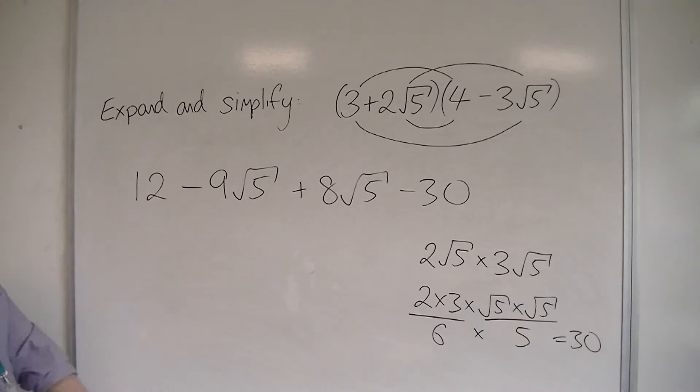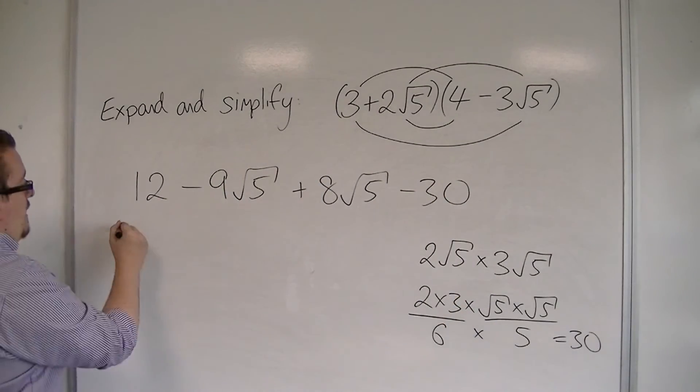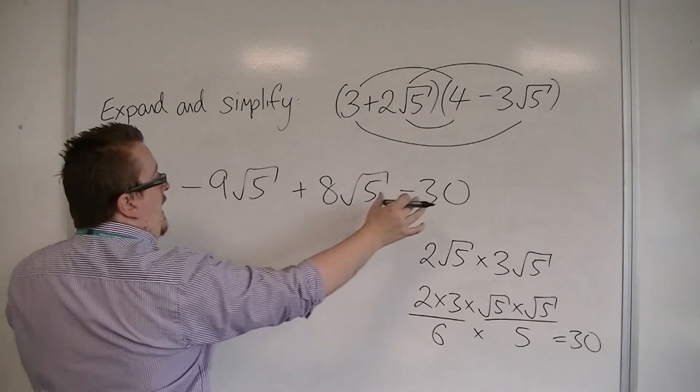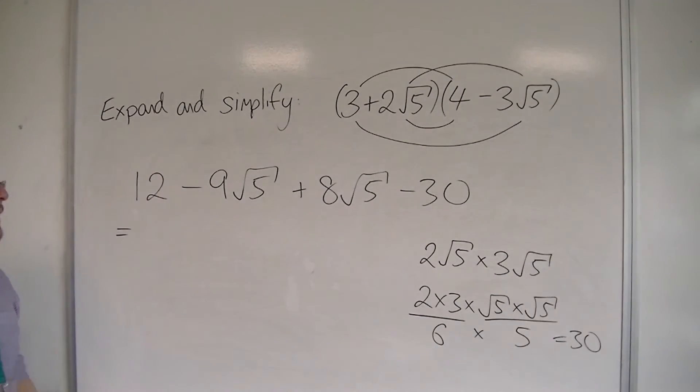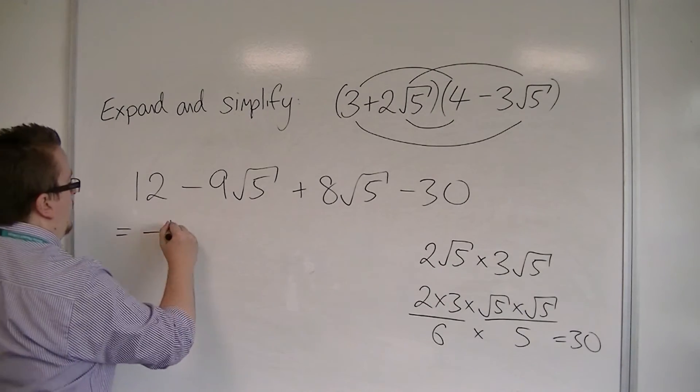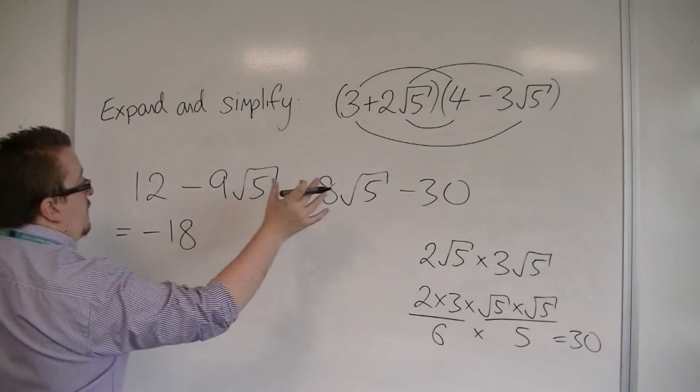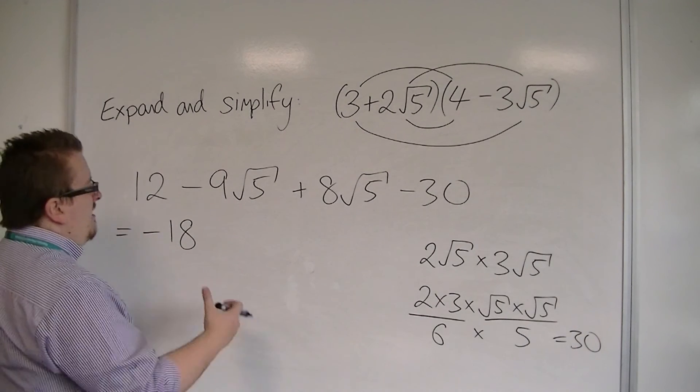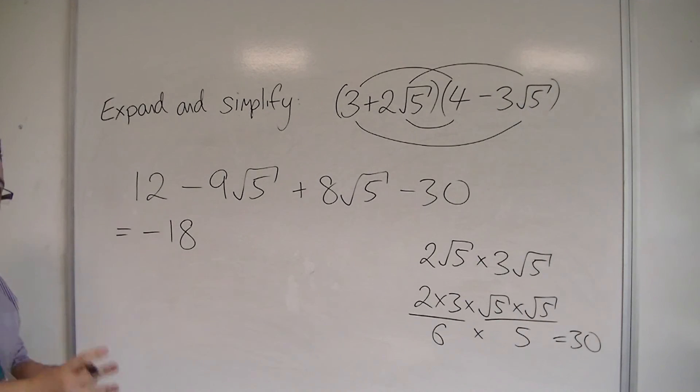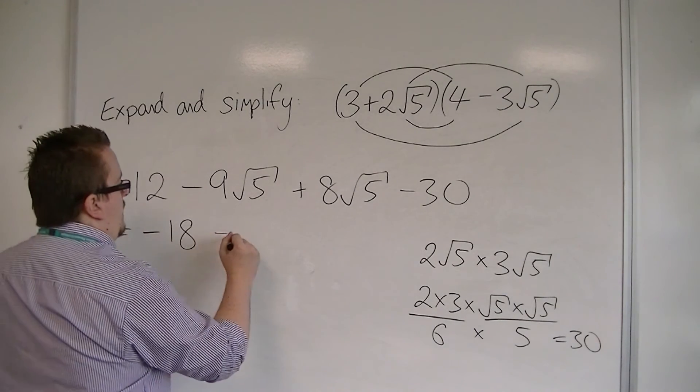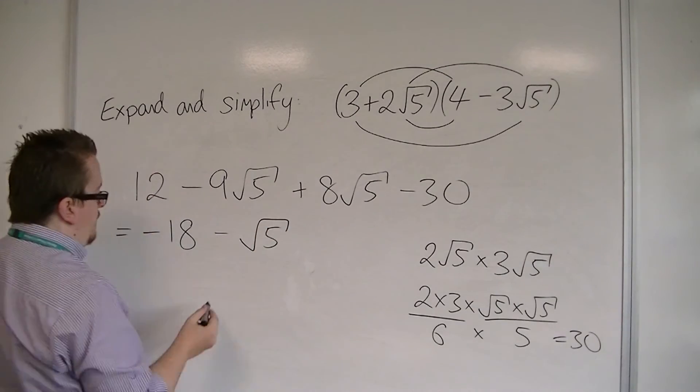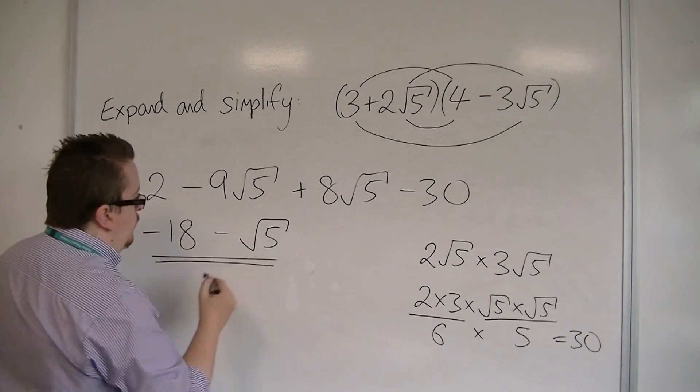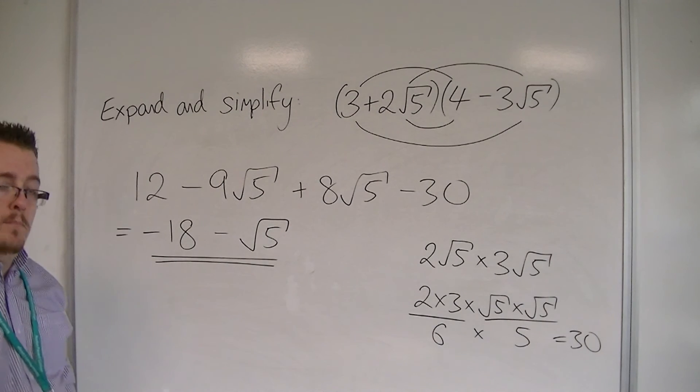So this is what we have. We've got 12 take away 30. I'm going to deal with those integers first. 12 take away 30 is going to be minus 18. Then I've got minus 9 root 5 plus 8 root 5, which would be minus 1 root 5. But we don't like writing the minus 1. It's like writing 1x. So we're going to write it as minus root 5, and that would be as far as I can simplify it.